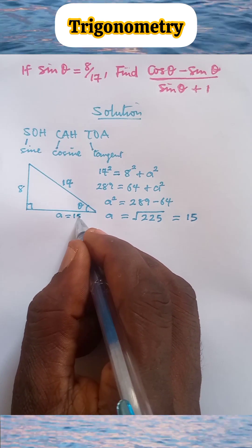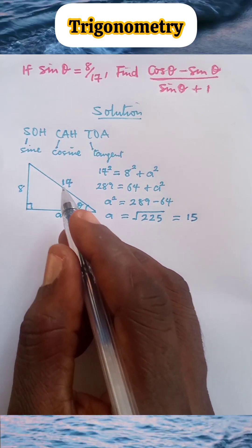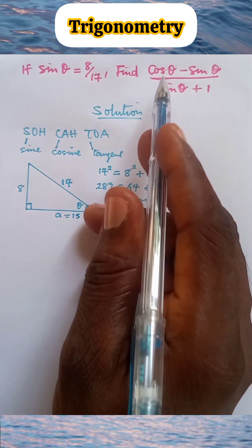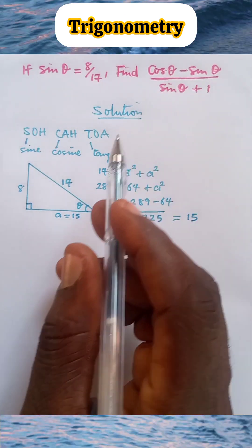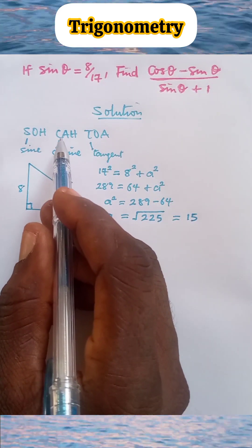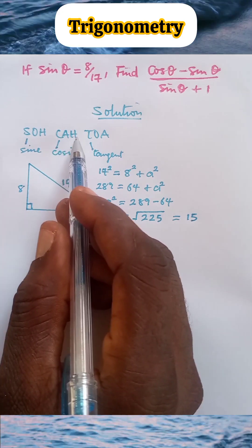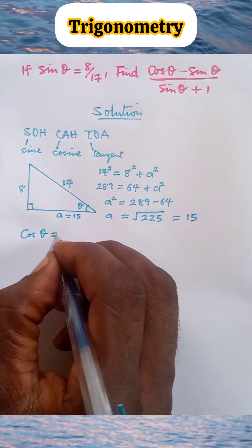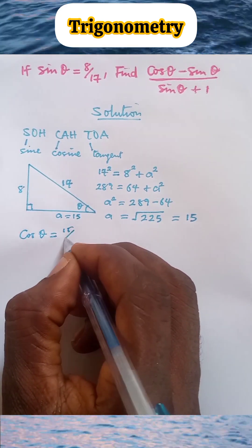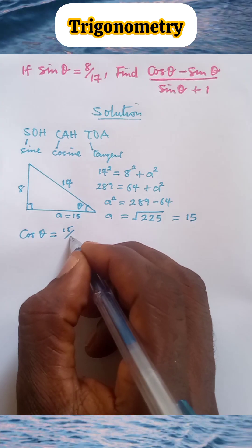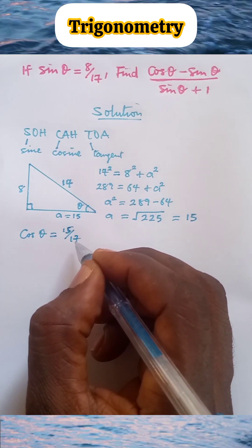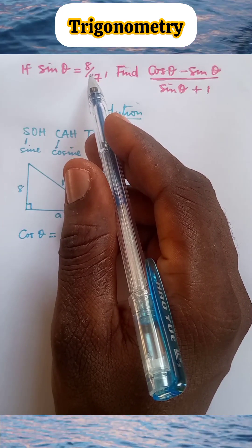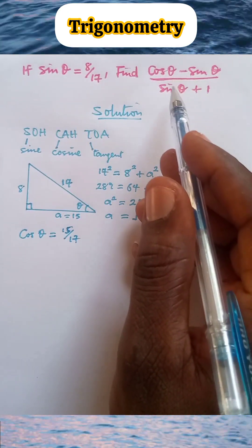Now we have known all the sides of the right angle triangle. We can now determine cosine θ. From SOHCAHTOA, cosine equals adjacent over hypotenuse. So cosine θ = A/hypotenuse = 15/17. So now we have known cosine θ and we've been given sine θ. We can now simplify this expression.